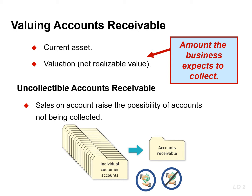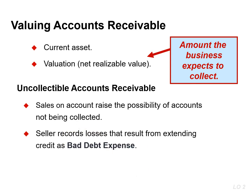At the end of the period, a company typically does not know which accounts receivable will become uncollectible. If they did, they wouldn't have extended credit to those customers. Although customers must satisfy the credit requirements of the seller before the credit sale is approved, some accounts become uncollectible. The seller records these losses that result from extending credit as bad debt expense, which is a normal and necessary risk of doing business on a credit basis.